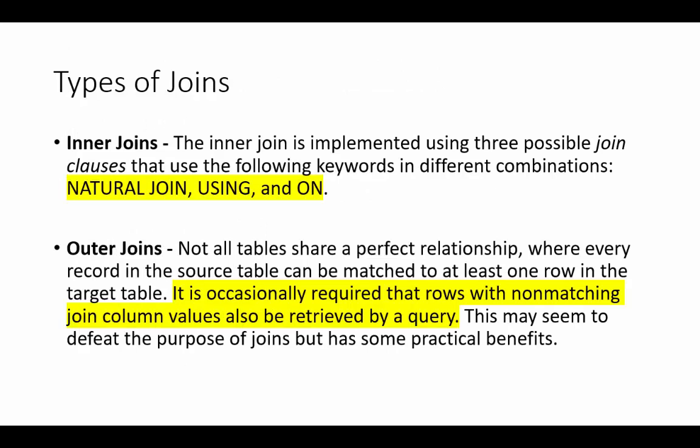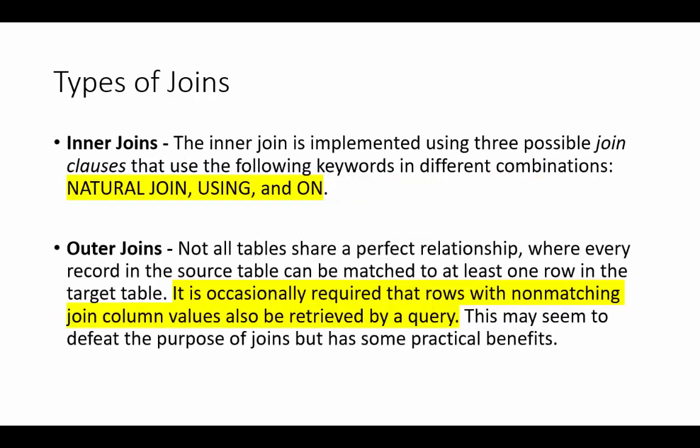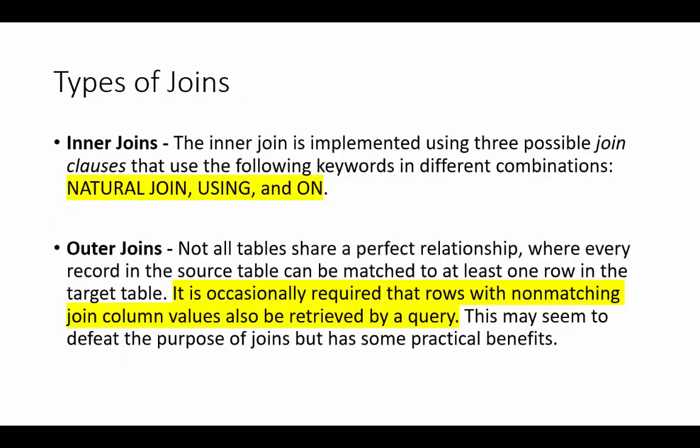We first come to types of joins. We have three types of joins: inner joins, outer joins, and cross joins. Inner joins use natural join, using, and on in their syntax, and we're going to cover these in future slides.